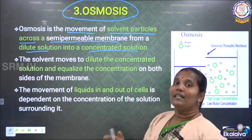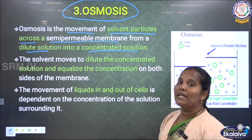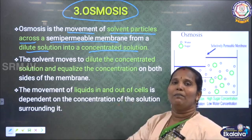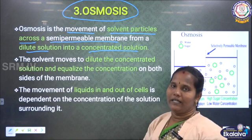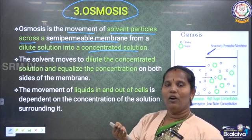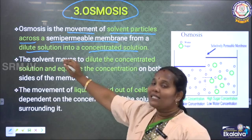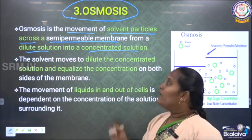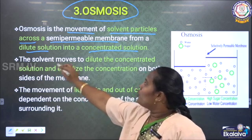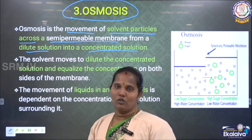Osmosis means the movement of particles. They move across the membrane. One semi-permeable membrane will be there; it works like a filter. A filter can allow only particular selected things to pass through. So across the semi-permeable membrane, particles transfer and move from the dilute solution into the concentrated solution.